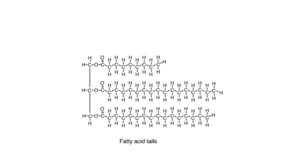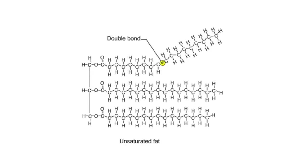Another difference is the presence or absence of double bonds between carbons in the fatty acid tails. Fatty acids without double bonds are called saturated fatty acids, while those with double bonds are called unsaturated fats. Let's take a look at each different type of fatty acid and discuss their properties.